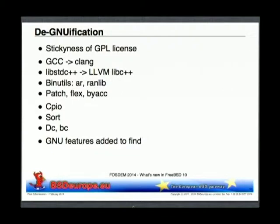What does this all give you? As a user, you'd say not much — we had these tools, we have these tools again, but with a different source and maybe different bugs, and a different license. But I think it's underestimated what would happen to the project if we hadn't done all this. The FreeBSD project would just stall and die.